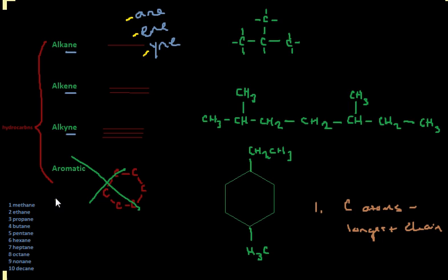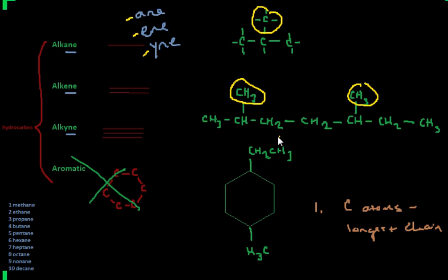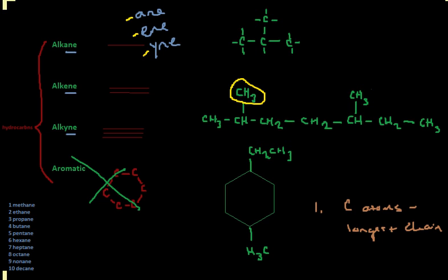The other thing we need to specify on our compounds is any substituents. The easiest way to think of a substituent is just anything that's branching off of that main chain. So it would be everything that I have circled here, because that's our main chain — and this is going to be our main chain.